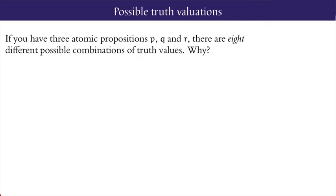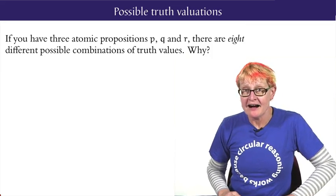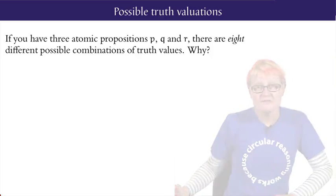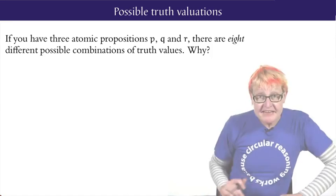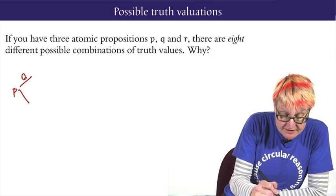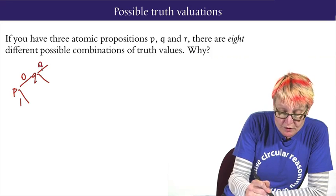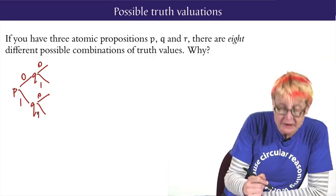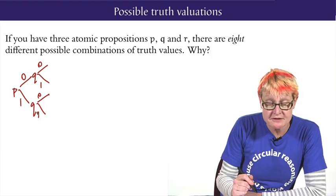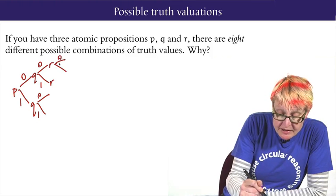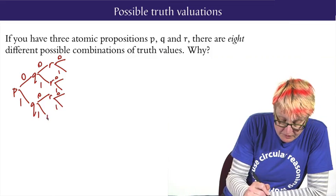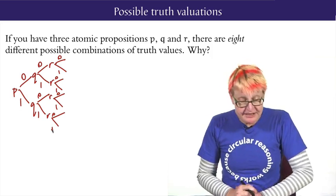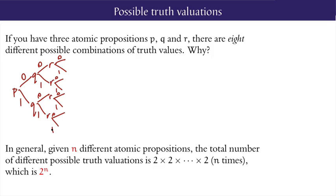So suppose we have a complex formula built out of three atomic propositions, P, Q and R. Then in fact, there will be eight different combinations of truth values transmitted to that formula. To see this, we see that P can take two possible values, 0 and 1. And then our next atomic proposition, Q, can be 0 or 1. That gives a total of four combinations for two atomic propositions. And then when we add the third, it can be 0 or 1, to give a total of eight combinations of truth values. In general, if we have n many atomic propositions, then we'll have 2 times 2 times 2, n times multiplied, which gives 2 to the power n many different possible truth combinations.